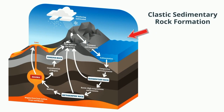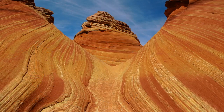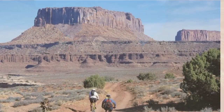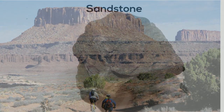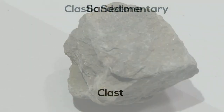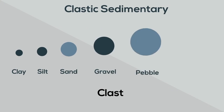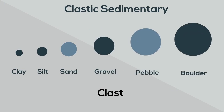Clastic sedimentary rocks are the group of rocks most people think of when they hear the term sedimentary rocks. Clastic sedimentary rocks are made up of pieces of pre-existing rocks called clasts that vary in size.